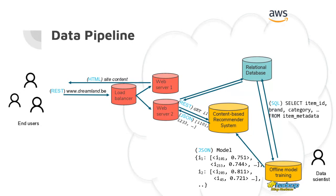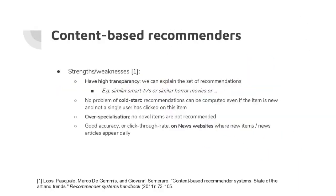A colleague does research on optimizing the training schedule — finding the optimal retraining interval. Once trained, the model is used by the online content-based recommender to make suggestions. For the content-based case, online computation is easy: store for each item the top 10, 50, or 100 most similar items in memory or a database, and just return that list.